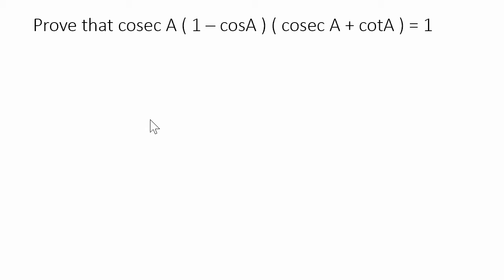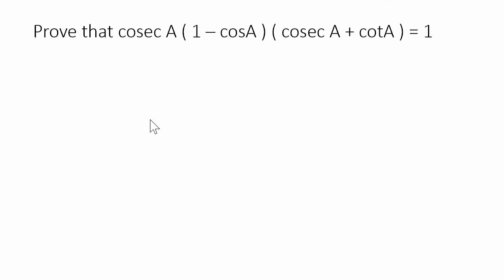What have they given? Cosecant A multiplied by (1 minus cos A) multiplied by (cosecant A plus cot A) equals 1, and we have to prove this. So, we have to prove what is being given.